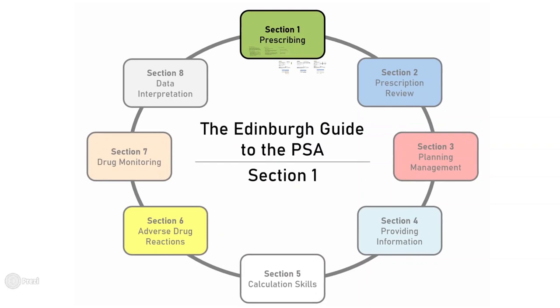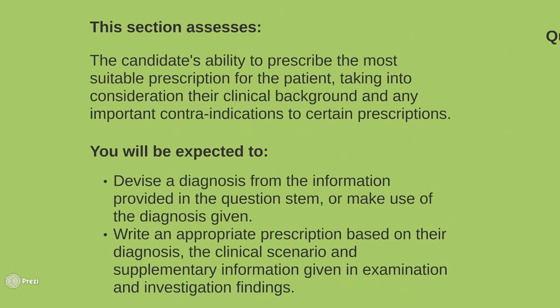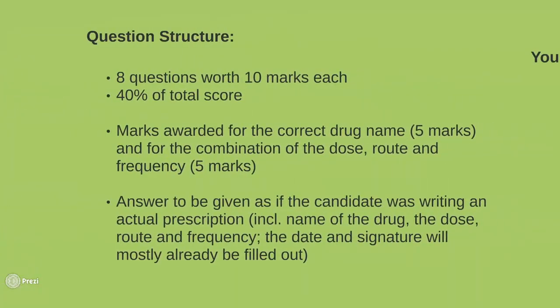Welcome to the very first video of the Edinburgh guide to the PSA. This video will focus on Section 1: Prescribing. As a brief overview, this section expects you to prescribe the most suitable medication for the patient, including its name, dose, route, and frequency. You should base your choice of prescription on the clinical background, investigation findings, and any contraindications or cautions that should be adhered to.